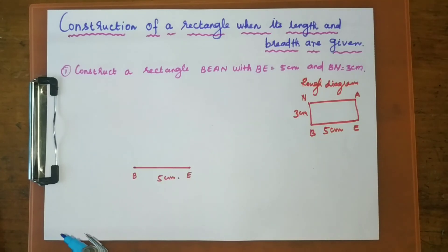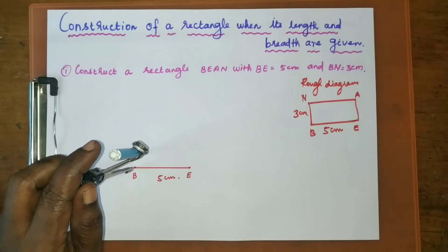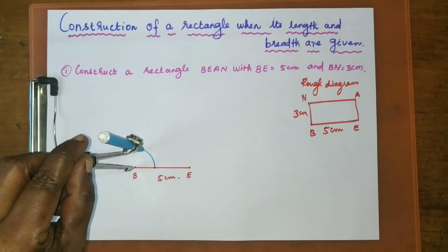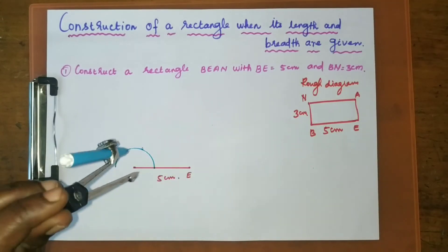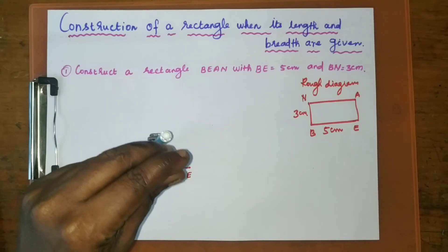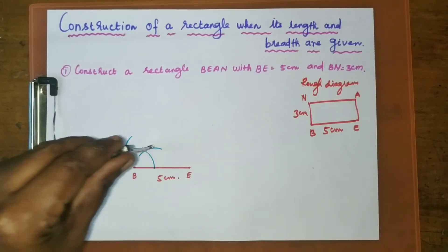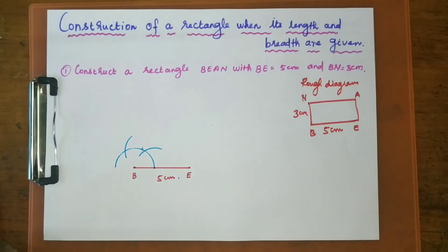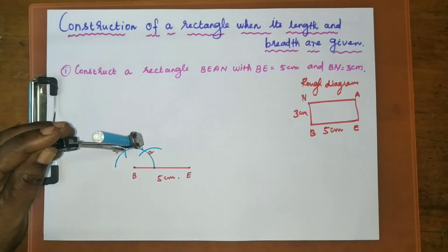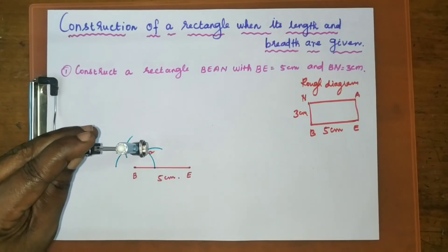Now I am going to construct a 90-degree angle. We already know how to construct 90°, 120°, 60°, etc. Take the compass with any radius and from B as center, draw one semicircle. Then with the same radius, from this point mark one arc, and from the second point mark one more arc. Now we have to construct the angle bisector for these two points.